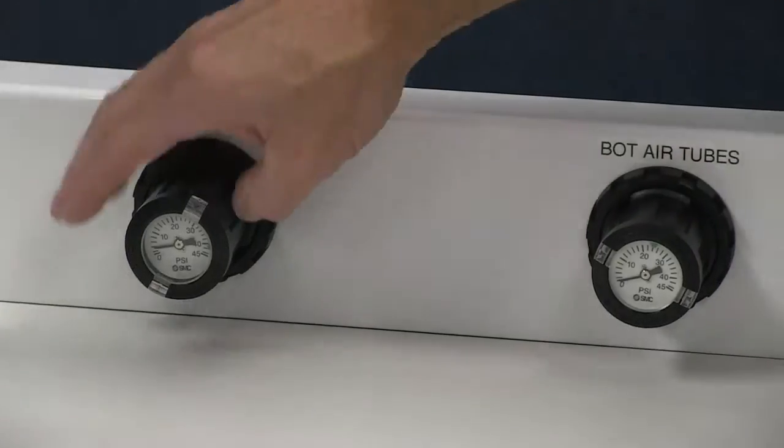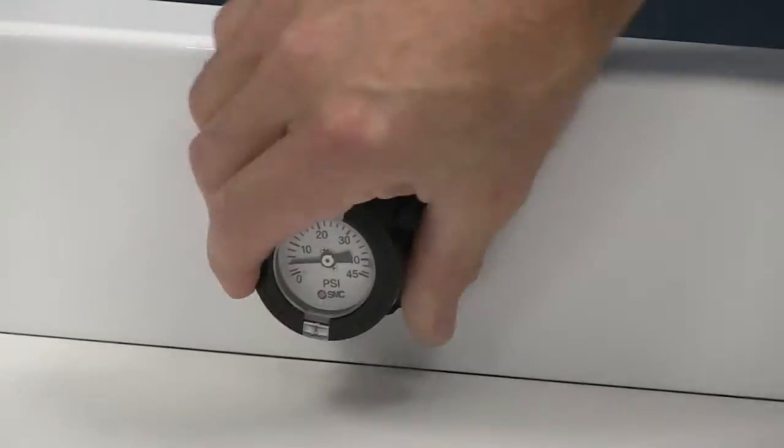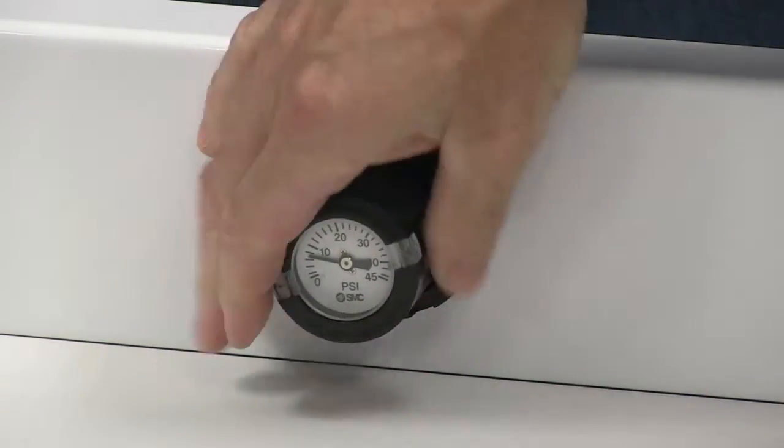Compressed air regulators enable easy independent adjustment from 0 to 30 PSI to the top and bottom hoods.